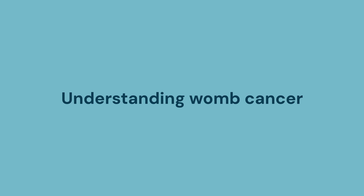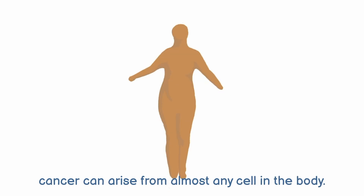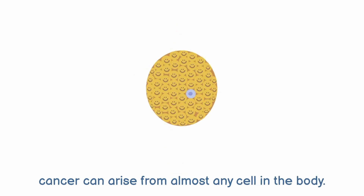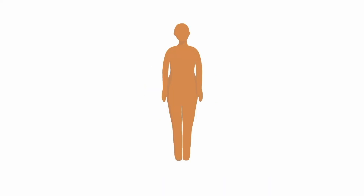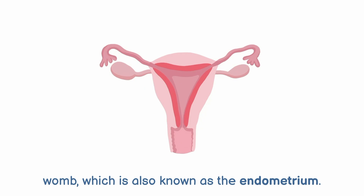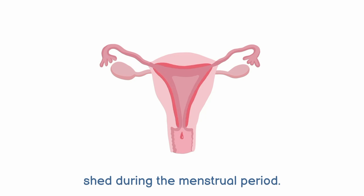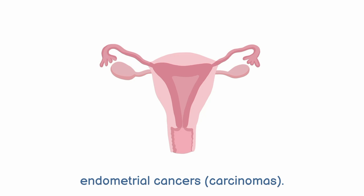Understanding womb cancer. This video has been made to help you understand more about womb cancer. As mentioned in the video titled 'What is cancer?', cancer can arise from almost any cell in the body. Most womb cancers arise from the lining of the womb, which is also known as the endometrium — the layer that is shed during the menstrual period. These womb cancers are known as endometrial cancers.